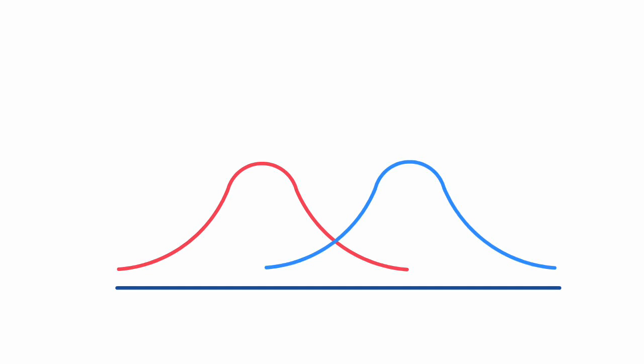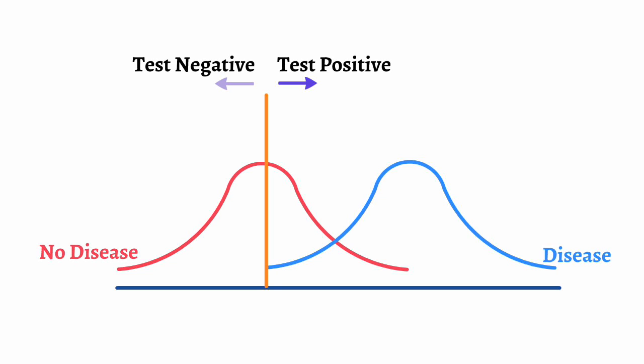Now that we understand these terms, let's talk about sensitivity and specificity. Imagine two bell-shaped curves next to each other with the middle tail ends of each curve overlapping. The curve on the left represents all the people in a given population who do not have a certain disease, and the curve on the right represents all those who have the disease. If you draw a vertical line to represent how good a test is at capturing affected members, all the people to the right of the line will test positive and all the people to the left will test negative. Even our best tests will have some false results due to the overlap between the two curves.